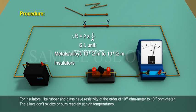For insulators, like rubber and glass have resistivity of the order of 10 to the power of 12 ohm meter to 10 to the power of 17 ohm meter.